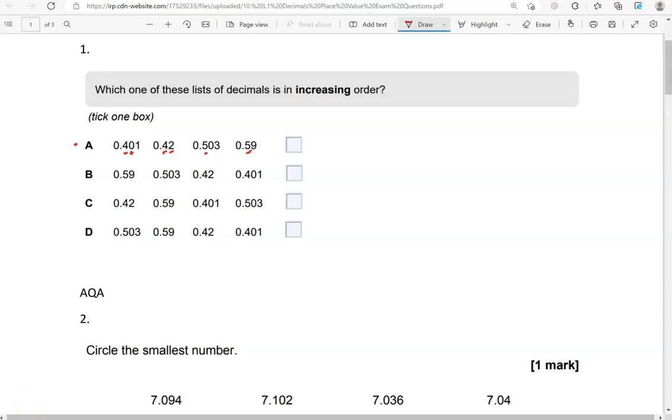Looking at the second number, that's the next biggest one. 0.42, 0.503. So that's a 0 there, and that's a 9. So this confirms that A is the correct option.